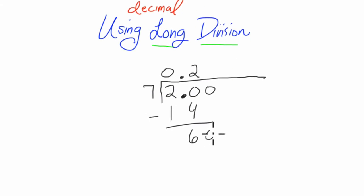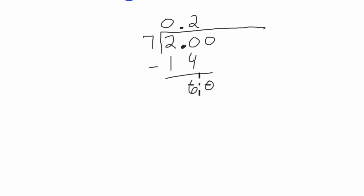7 goes into 60 now. This is not really 60, this is 0.6, but we're thinking of it proportionally. So 7 goes into 60 eight times, so 8 times 7 is 56. We subtract these two and get 4.